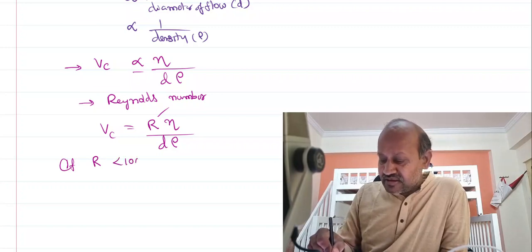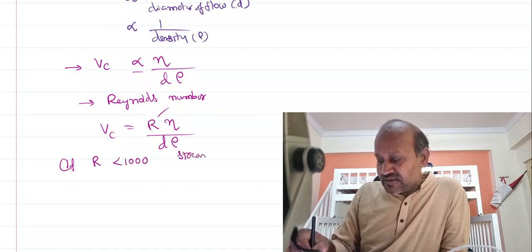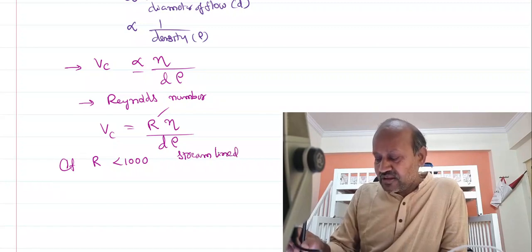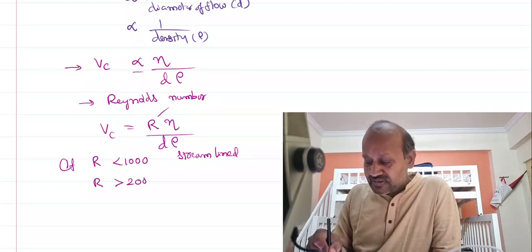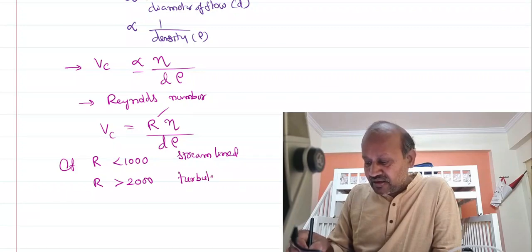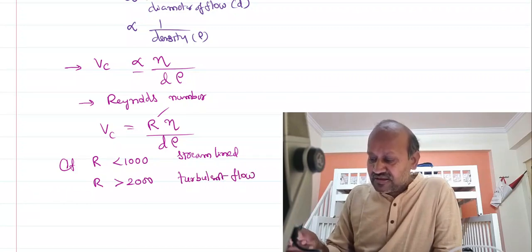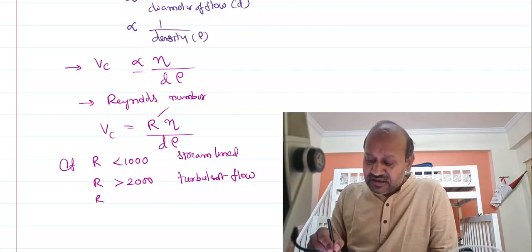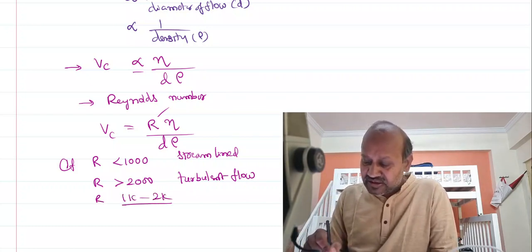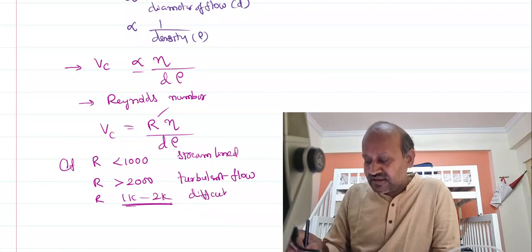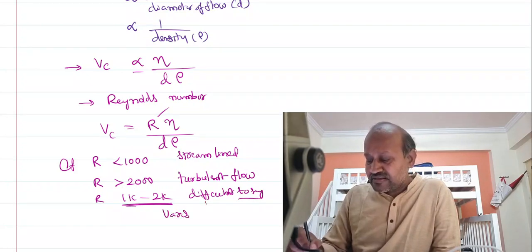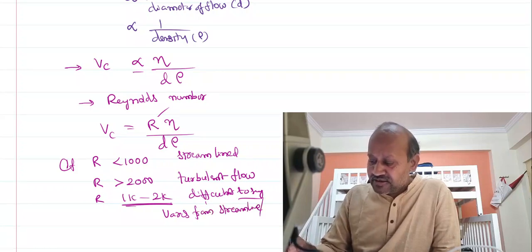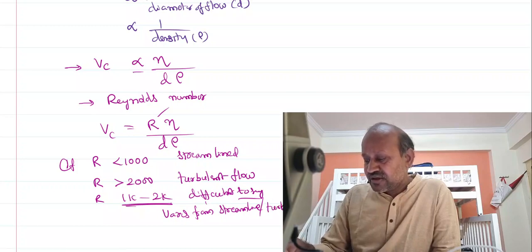It is experimentally observed that if the Reynolds number is less than 1000, the fluid flow is streamlined — all particles at a given point have the same velocity. If the Reynolds number is greater than 2000, the flow is turbulent. If the Reynolds number is somewhere between 1000 and 2000, it is difficult to predict whether the flow is streamlined or turbulent — the flow varies between the two.